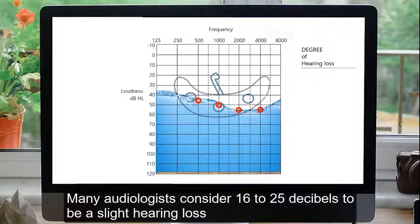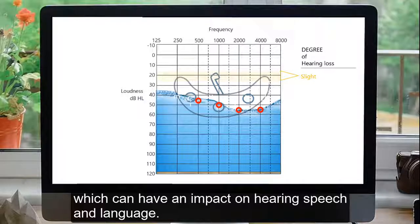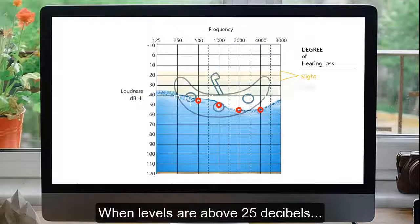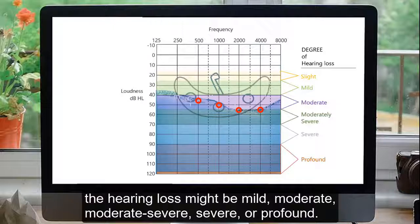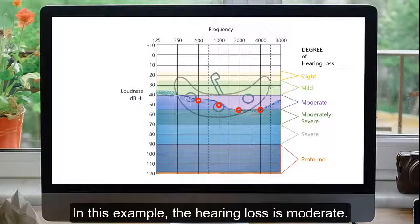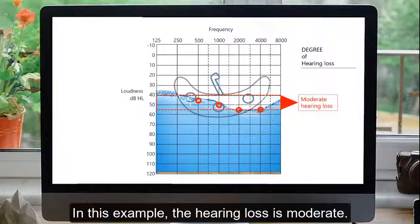Where the waterline falls across the first three thresholds shown here will help to define the degree of hearing loss. Many audiologists consider 16 to 25 decibels to be a slight hearing loss, which can have impact on hearing, speech, and language. When levels are above 25 decibels, the hearing loss might be mild, moderate, moderate-severe, severe, or profound. In this example, the hearing loss is moderate.